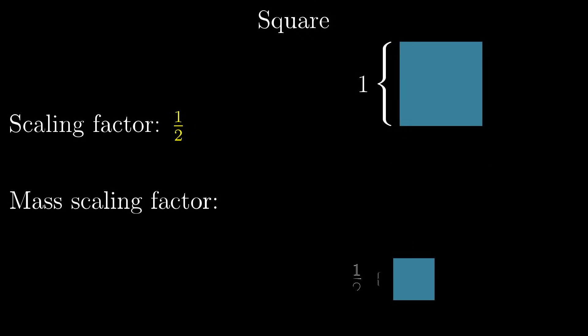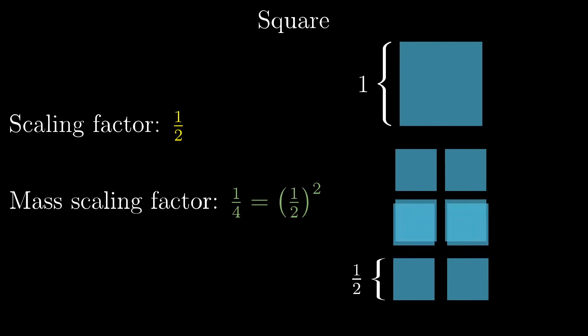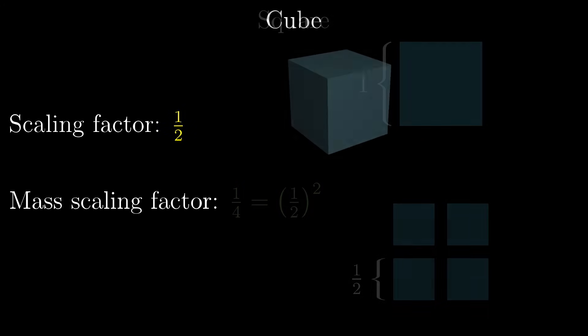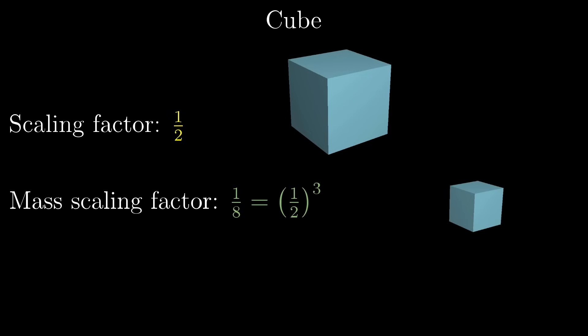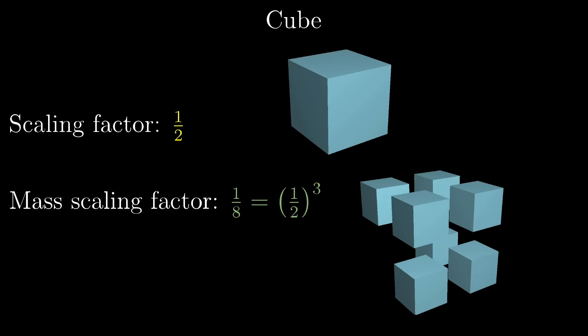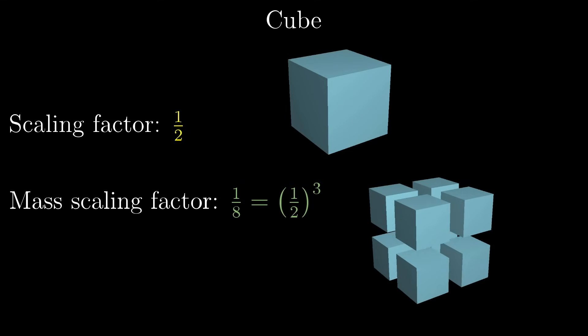When you scale down a square by one-half, its mass is scaled down by one-fourth, where again you can see this by piecing together four of the smaller copies to get the original. Likewise, when you scale down that cube by one-half, the mass is scaled down by one-eighth, or one-half cubed, because it takes eight copies of that smaller cube to rebuild the original.